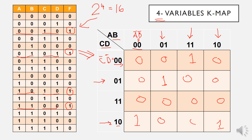I hope you understand how to transfer the truth table representation into the K-Map for 3 to 4 input variables. In the next session, I will explain how to create the Boolean expression from the K-Map and use it for simplification. That's it — thank you.